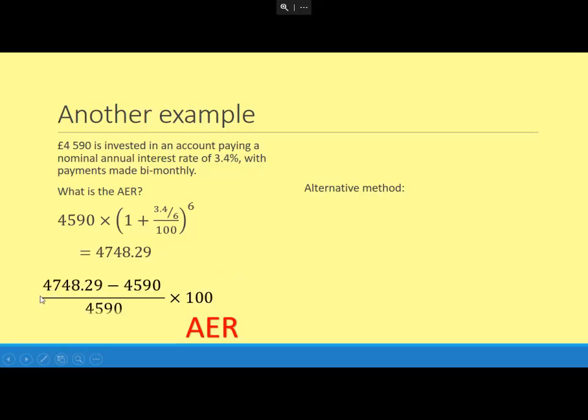Well, let's just do that percentage change calculation again. So we've ended up with that much; it's not so easy to see how much has gone up by now. I've done the £4,748.29, taken off the original amount to work out how much it changed by, divided by the original amount, and then times 100, which is 3.449%. So nominal interest rate of 3.4%, and AER of 3.449%.